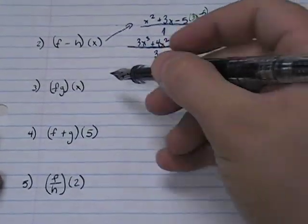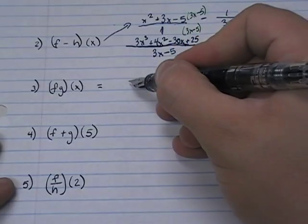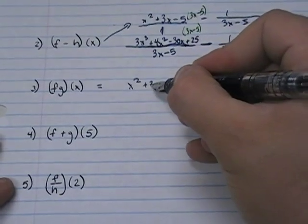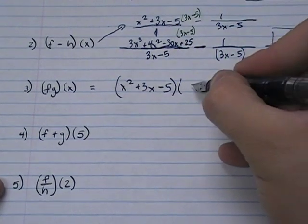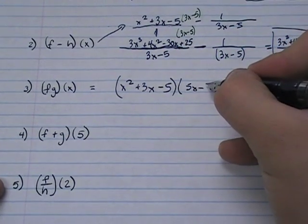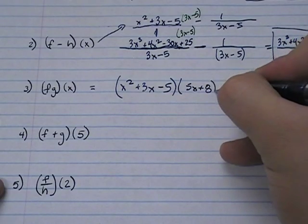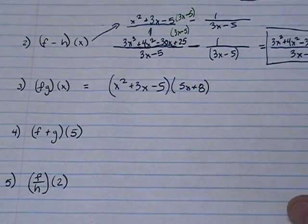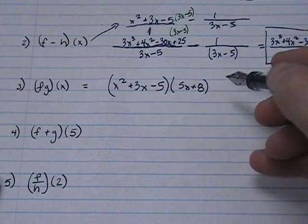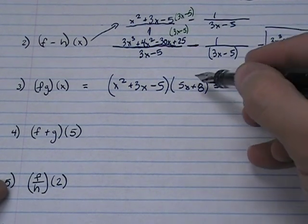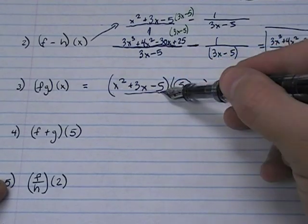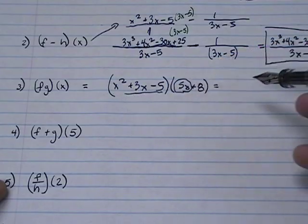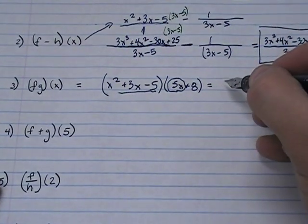Here we've got f times g. So what they've asked us to do is f times g. How do we do that? It's real simple. We use a thing called the distributive method, and that's where you distribute this term to all three of these terms. You distribute this term to all three of these terms. So you should end up with six terms.